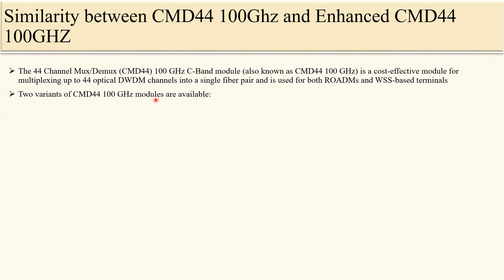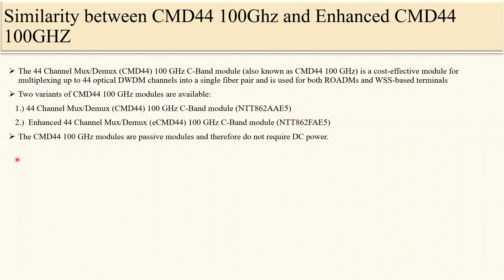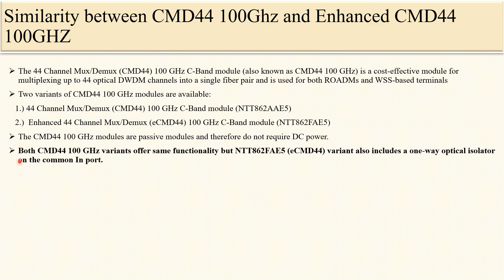Two variants of CMD44 100 GHz modules are available. The first one is CMD44 100 GHz, and the second one is the enhanced CMD44 100 GHz. These CMD44 100 GHz modules are passive modules and therefore do not require DC power. The operation of these two modules does not require any DC or AC power — they are totally passive devices. Both CMD44 100 GHz variants offer the same functionality.